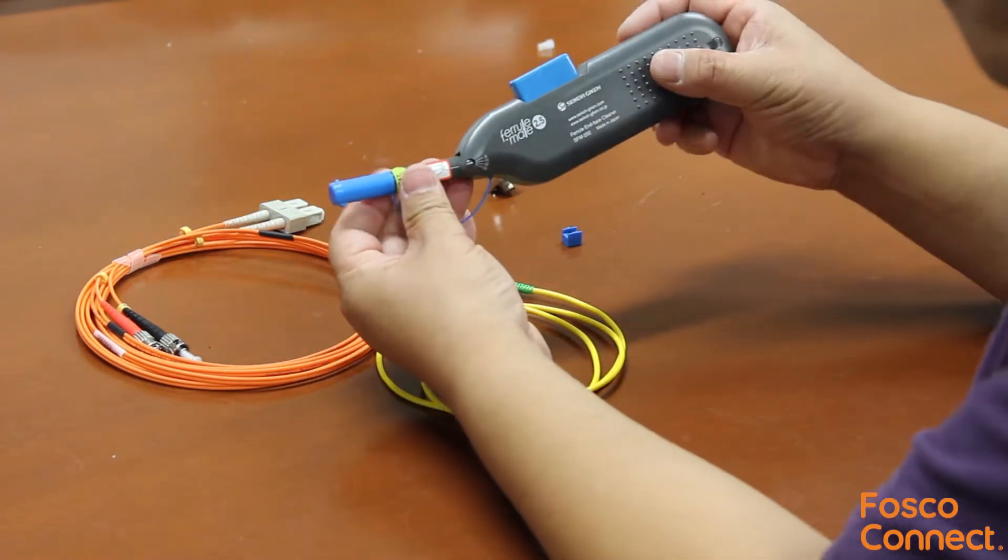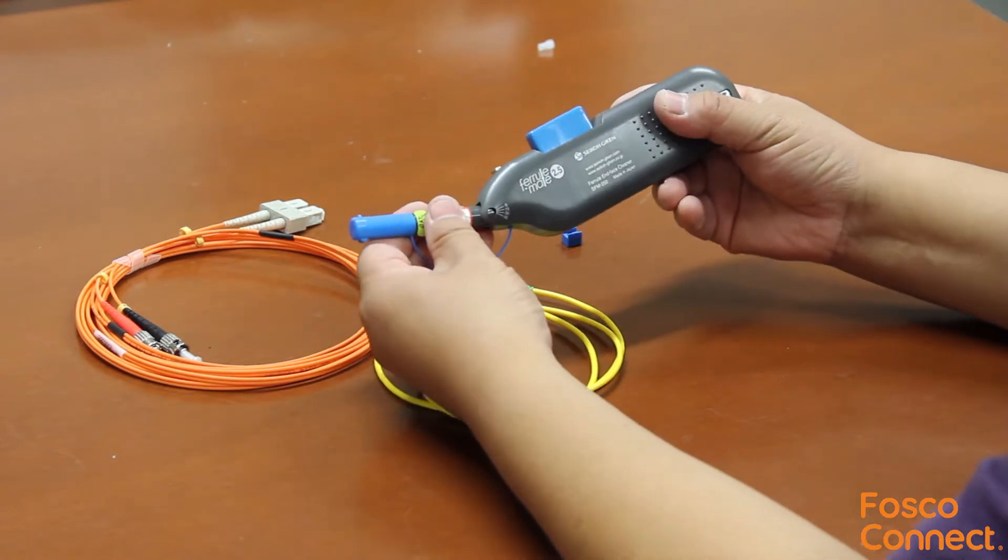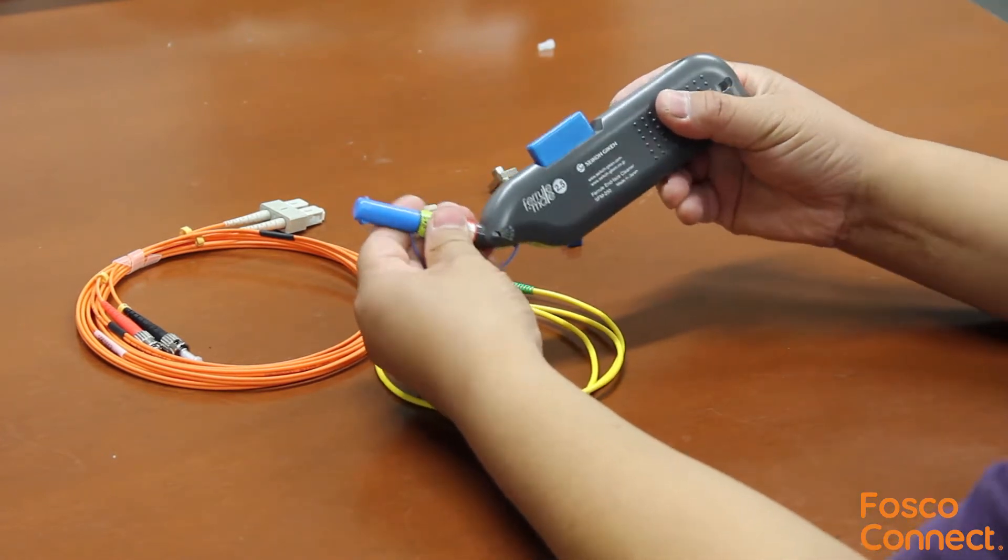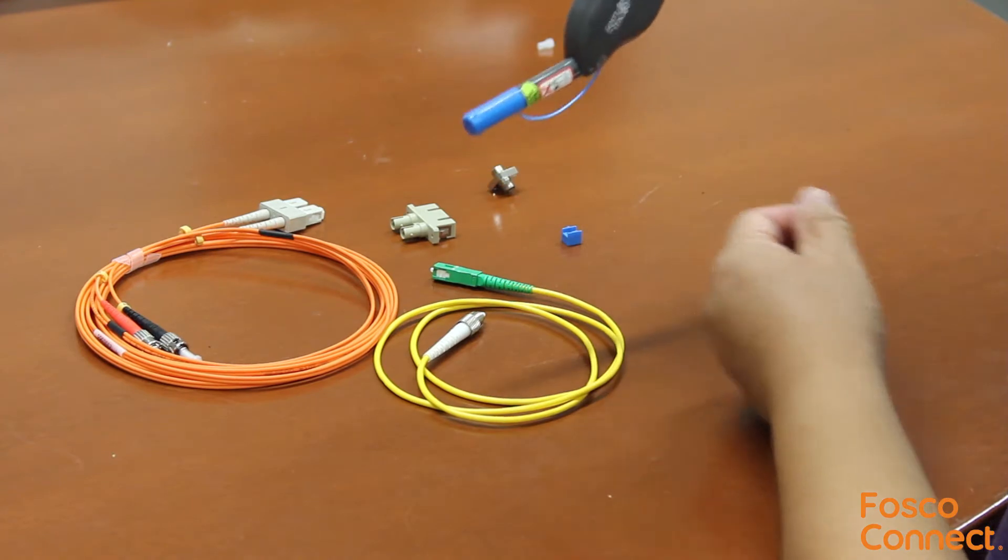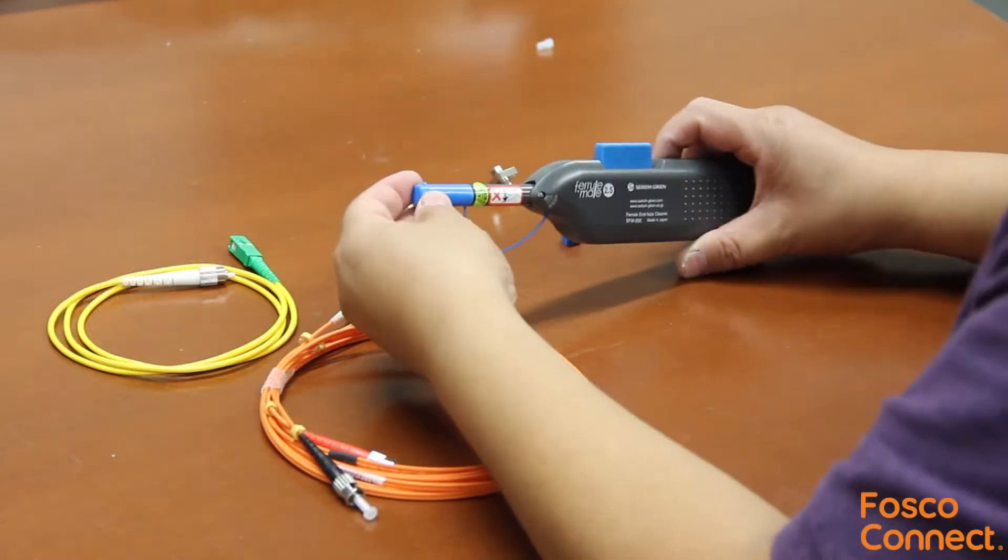You can adjust the cleaning angle at 0, 15, 30, and 45 degrees, such that you can clean the adapters on a rack at a convenient angle. Here is how you clean a